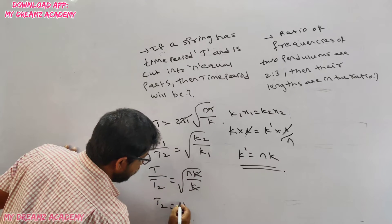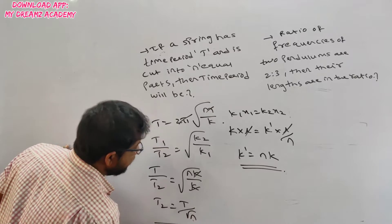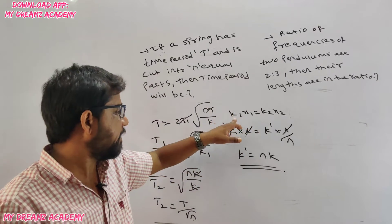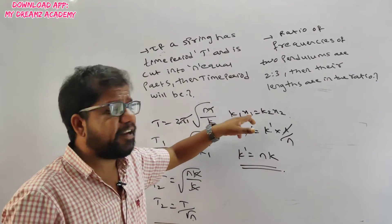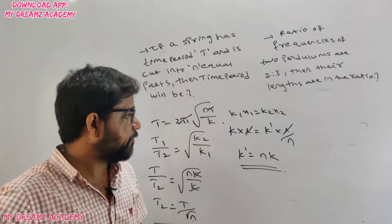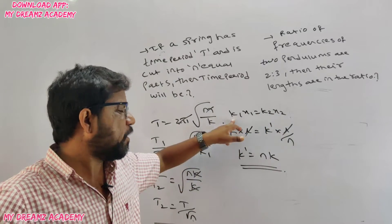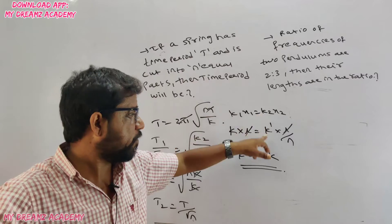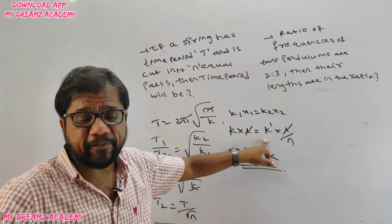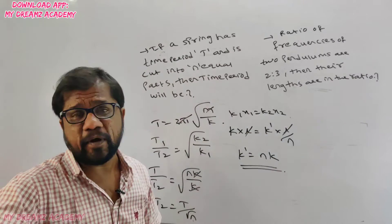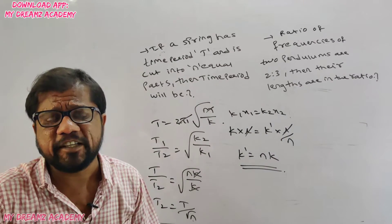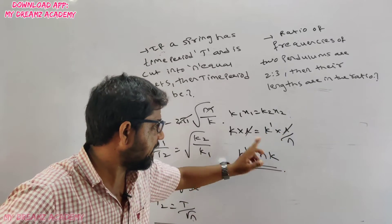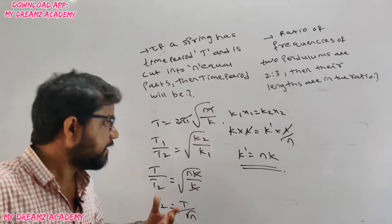To summarize the spring-cutting derivation: using k₁x₁ = k₂x₂, where k is the original spring constant and l is the original length, after cutting into n parts each part has length l/n. The l's cancel, giving the new spring constant k' = nk. Substituting this value gives the new time period T₂ = T/√n.